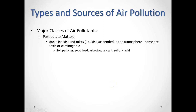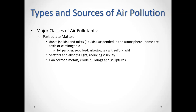We can break air pollutants down into certain classes. One class we talk a lot about is particulate matter, which consists of either solids or liquids — very small dust-type particles or mists suspended in the atmosphere. These are not gases; they stay in the atmosphere and can be toxic, even carcinogenic. Examples include dust from soil, soot from burning, lead, asbestos, sea salt, and sulfuric acids. In great enough concentrations, they can cause problems: they can scatter or absorb light, reduce visibility, and corrode things.